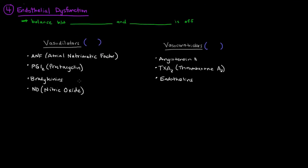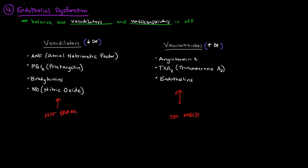The final factor to consider is the balance between vasodilators and vasoconstrictors — things that make blood vessels larger or smaller, respectively. Vasodilators decrease blood pressure while vasoconstrictors increase it. In high blood pressure, there is too much constriction and not enough dilation — when this balance tips in favor of constrictors, the result is elevated blood pressure.